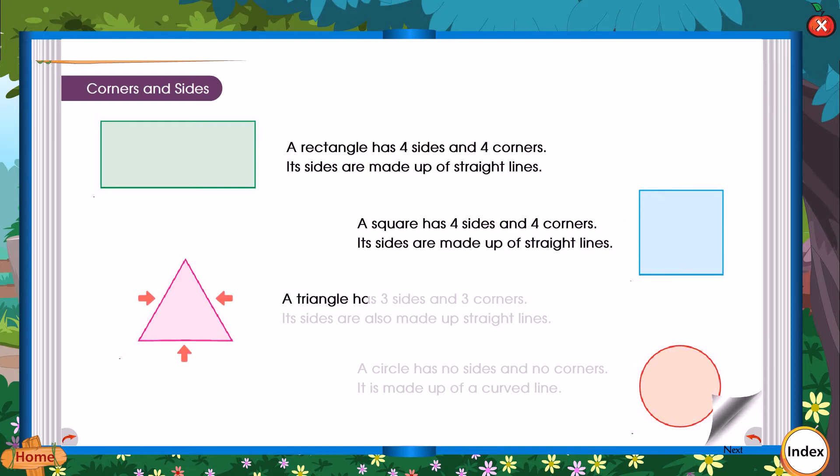A triangle has 3 sides and 3 corners. Its sides are also made up of straight lines. A circle has no sides and no corners. It is made up of a curved line.